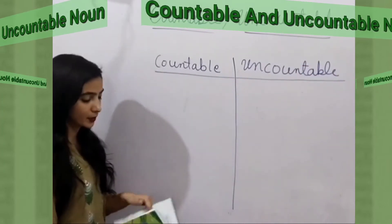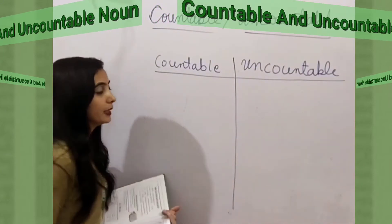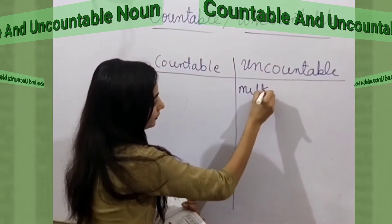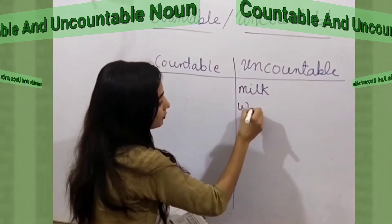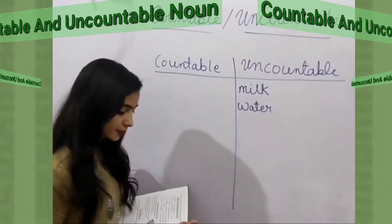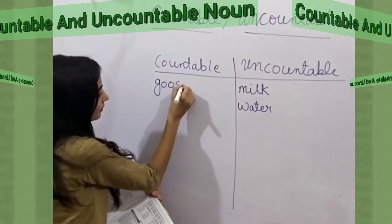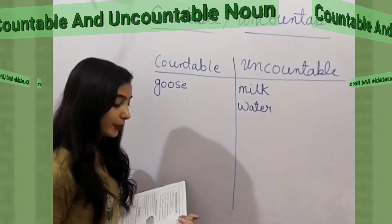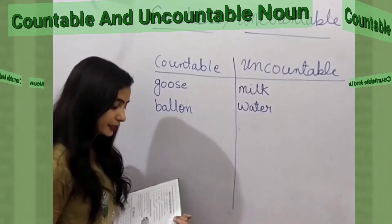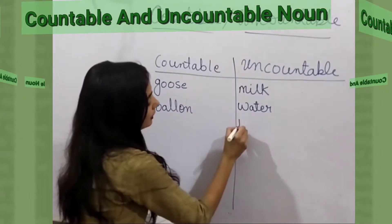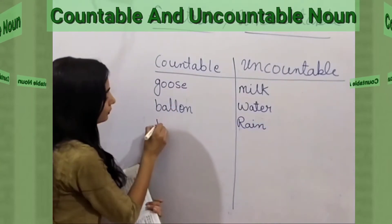Let's start. Milk is uncountable. Water is also uncountable. Goose is a countable noun. Balloon is also countable. Rain is uncountable. Piano is also countable.